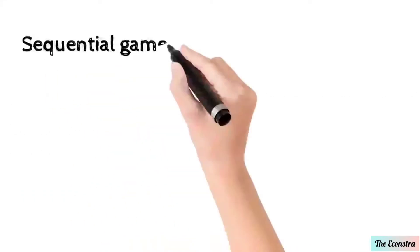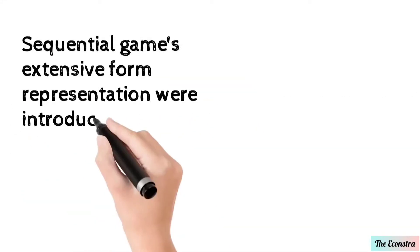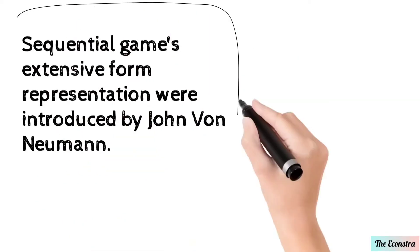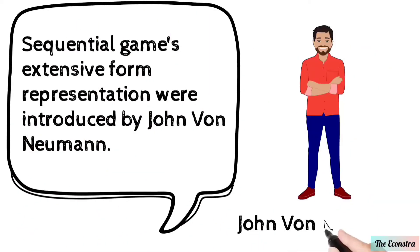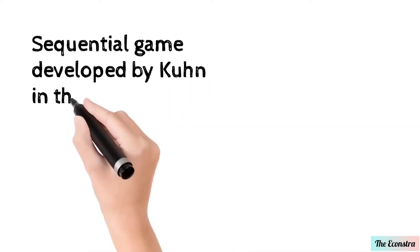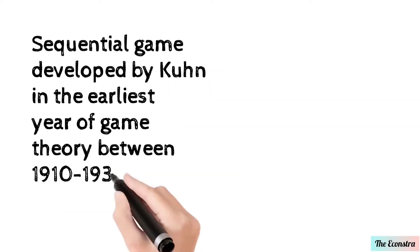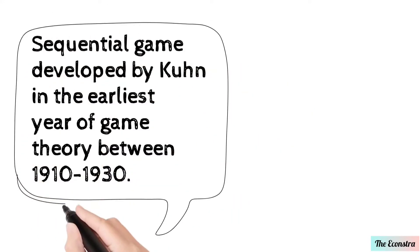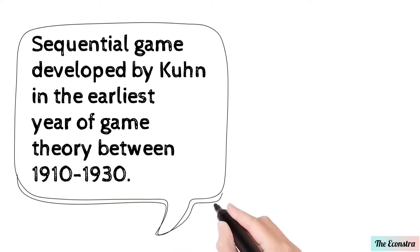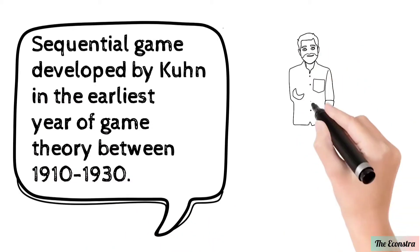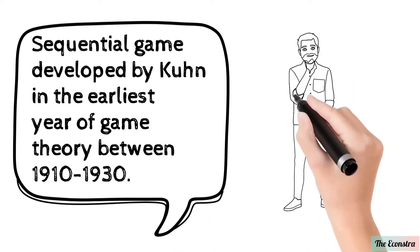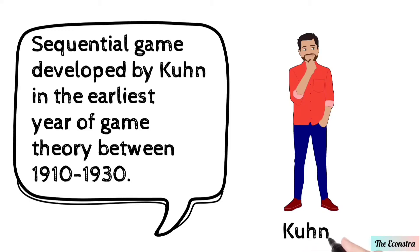Sequential games' extensive form representation was introduced by John von Neumann, developed further in the earliest years of game theory, between 1910 and 1913.